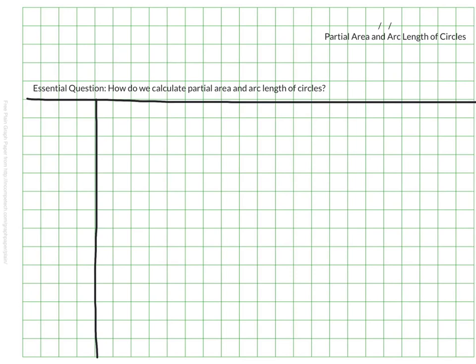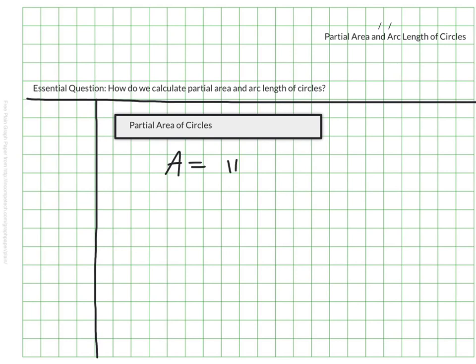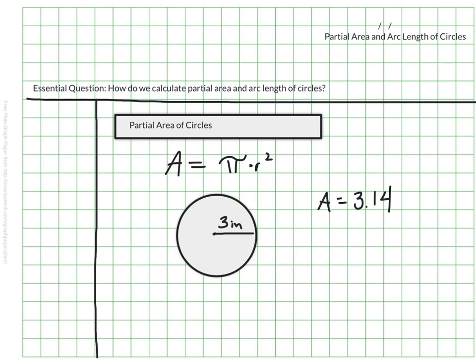Let's start by looking at partial area. As we already know, the area of a circle is the space inside a circle, and we can calculate the area by doing π times the radius squared. So if we were just looking at this circle and we wanted to find the area, we'd say, well I know it's 3.14 times my radius squared, and I would just go through my order of operations and solve.